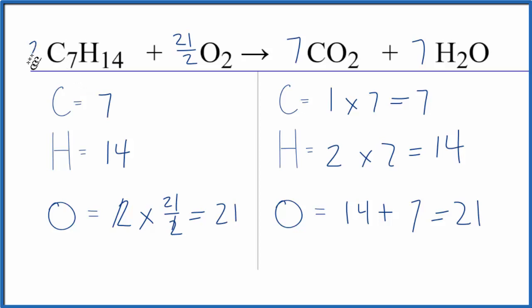Two times the one here gives us a two. Two times 21 over 2 gives us the 21. Two times seven is 14. Two times seven is 14. And these are the whole number coefficients for this equation.